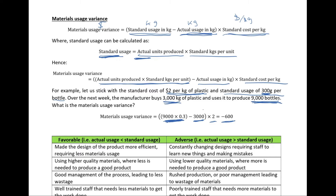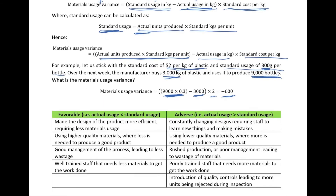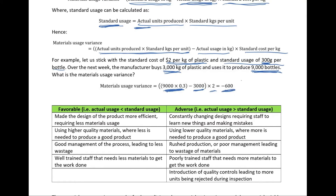The table below highlights some of the reasons why a materials usage variance could be favorable or adverse. For an adverse variance, where actual usage exceeds standard usage, one reason could be constantly changing product designs requiring staff to learn a new design — during the learning process mistakes happen, leading to wastage. Another reason could be using lower quality materials, where you need to use more of them to produce the same amount of final product.